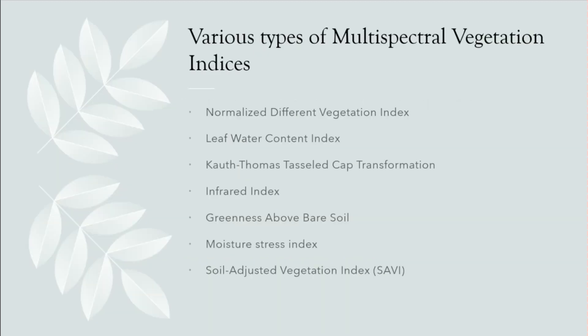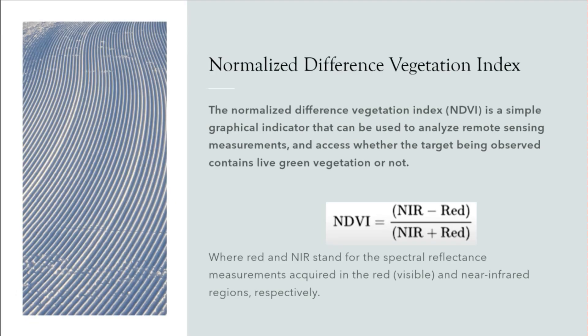There are various types of multispectral vegetation indices: Normalized Difference Vegetation Index, which we're talking about today; leaf water content index; Kauth-Thomas tasseled cap transformation; infrared index; greenness above bare soil; moisture stress index; and soil adjusted vegetation index, or SAVI. I don't expect you to memorize these — just understand the fundamentals behind these indices. Today we're going to discuss in detail the soil adjusted vegetation index during the lab exercise. The most common vegetation index I'll discuss now as context is the NDVI.